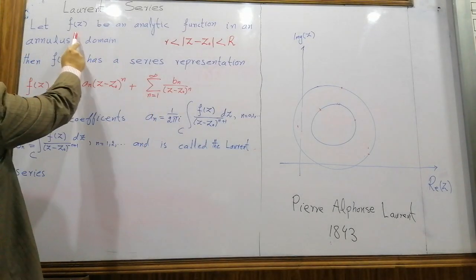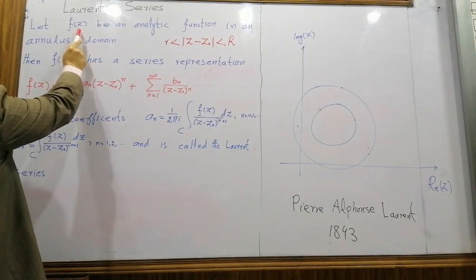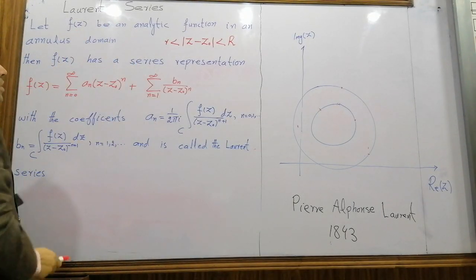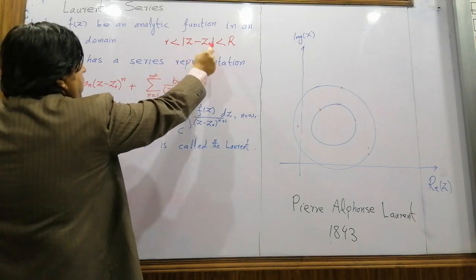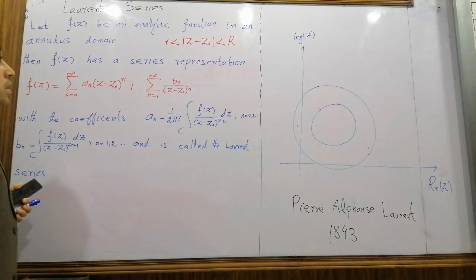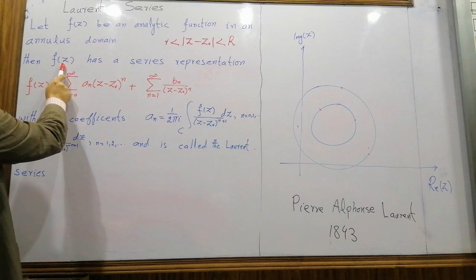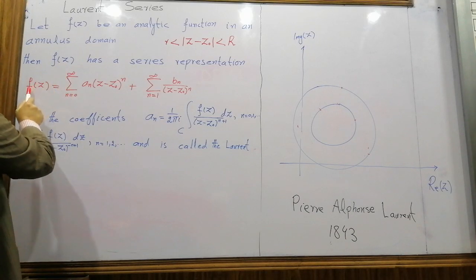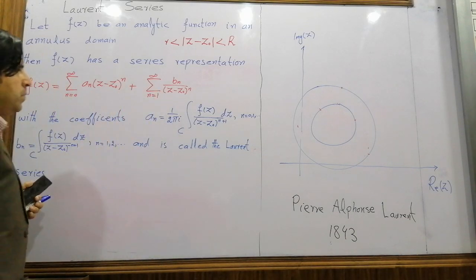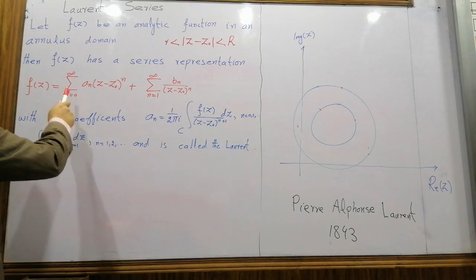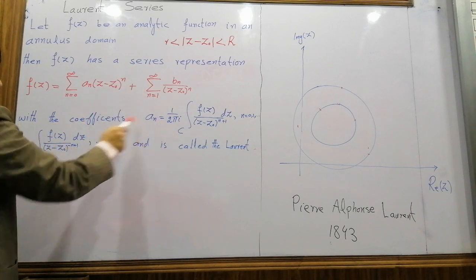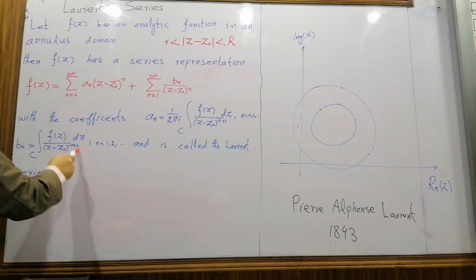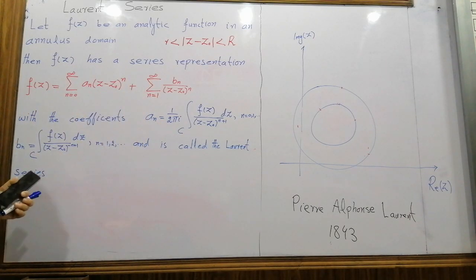If f(z) is some analytic function in this annular domain, then the function f(z) can be expressed in a specific form, where the coefficients aₙ and bₙ are given by certain formulas. This is called the Laurent series.